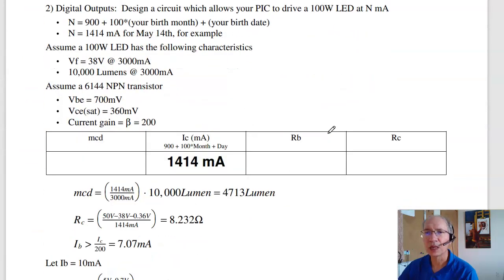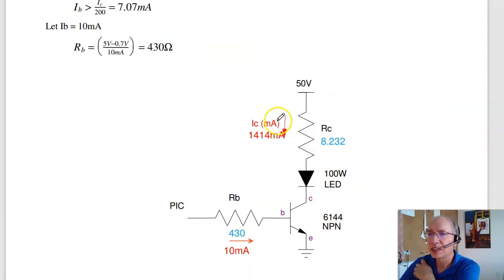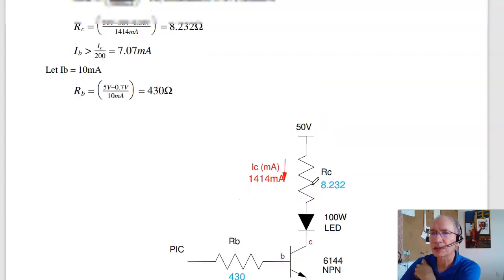Problem two. Design a transistor amplifier. So this is using a transistor to switch. I want to turn on and off an LED. In this case, I want the current to be your birth date. For me, that's 1414 milliamps. Find RC and RB and also how bright it is.